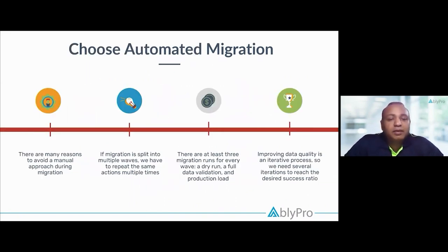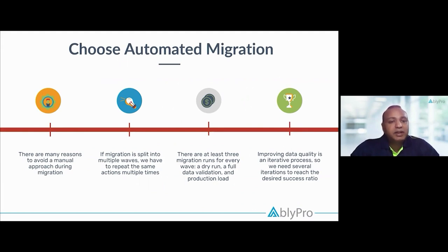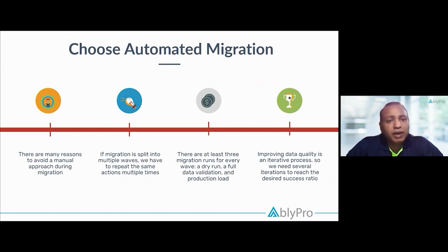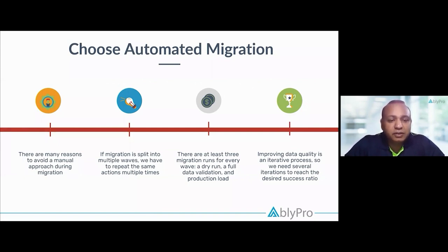Migration is split into multiple phases — there are at least three stages. First is a dry run that you do for data migration, maybe on a partial sandbox. Then there may be a full data validation on a full sandbox after doing your sandbox refresh. Finally, there is the real production upload. So there are at least three phases you have to go through for data migration.